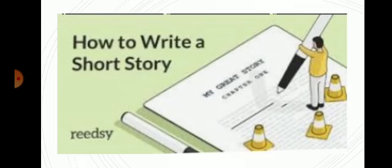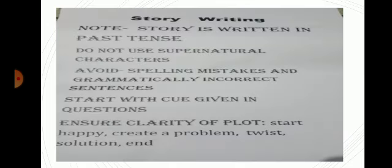How to write a short story? Shall we see that? We have certain format to write the story. First one, we are supposed to note all these things. Story is written in past tense. We should not use supernatural characters, that is we should not use imaginary characters. Avoid spelling mistakes and grammatical errors. Then start with a cue given in questions. Ensure clarity of plot, that is start happily, create a problem, then twist should be there in between the paragraph, solution should be there before the end. Then end of the story.